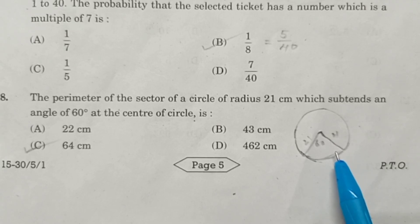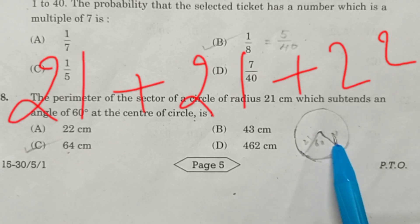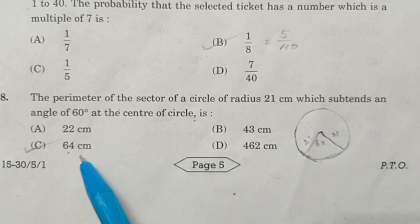Therefore the perimeter is equal to 64. You will get 64 by 21 plus 21, which is 42, plus the length of the arc is 22. The final answer is 64 cm.